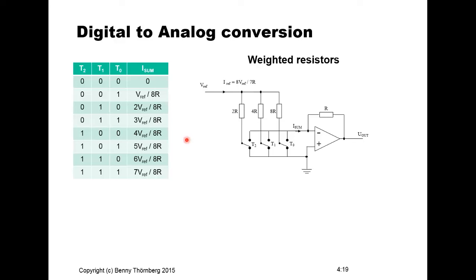We start with D-to-A conversion using the simple principle of weighted resistors. The whole circuit is based on a summing amplifier — there is a feedback resistor and an operational amplifier. We sum the currents into the input branch of the operational amplifier, and the values of the resistors on the inputs increase with powers of 2. The switches are either connected to ground potential or to the summing current branch. Depending on how these three switches are set, corresponding to three input bits, you will have different output levels following discrete binary-coded levels.